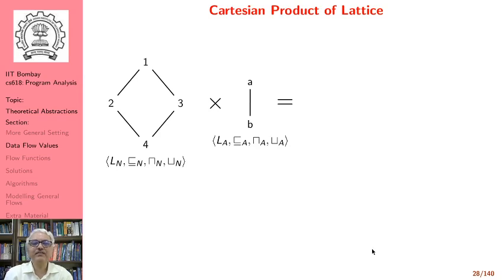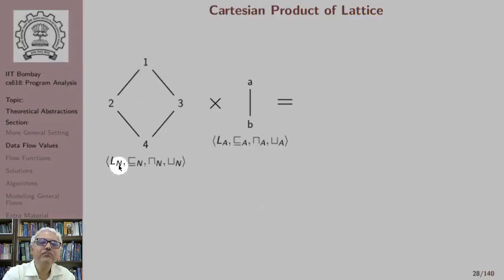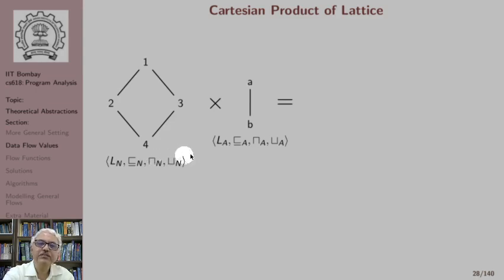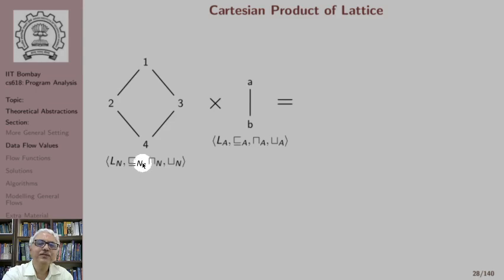Another way of constructing a lattice is taking a Cartesian product of two lattices. We consider two lattices: a lattice on numbers L_n with elements 1, 2, 3, 4 — where 2 and 3 are weaker than 1, and 4 is weaker than 2 and 3 — and a lattice on alphabet L_a with elements a and b. For convenience, we attach subscript n for operations on the number lattice and subscript a for operations on the alphabet lattice.